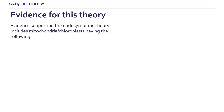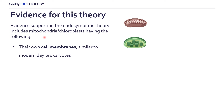This is still a theory and we don't know this for sure, but there is a lot of evidence supporting the endosymbiotic theory. This includes the following: mitochondria and chloroplasts have their own cell membranes and are really the only organelles in our cells that have these membranes, just as prokaryotic cells originally did.